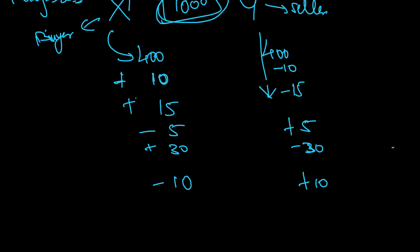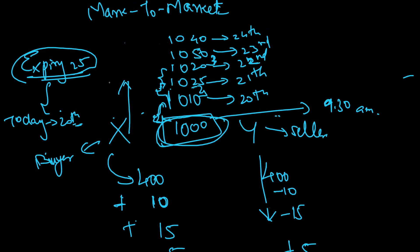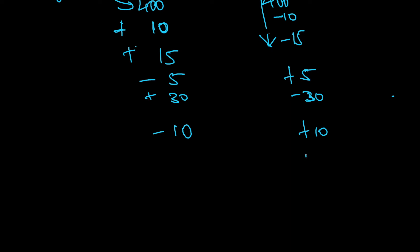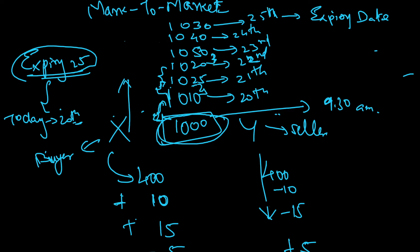On the 25th, which is the expiry date, imagine the price goes to 1030. It has come down, so the seller will be happy — seller gets plus 10 and the buyer loses 10. After that the contract expires. On the 26th, whatever the price is, it doesn't matter to X or Y, as the 25th was the expiry date.